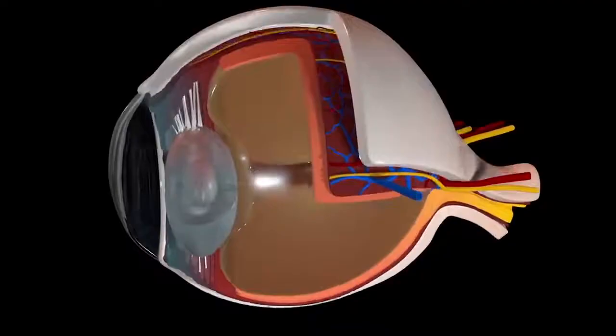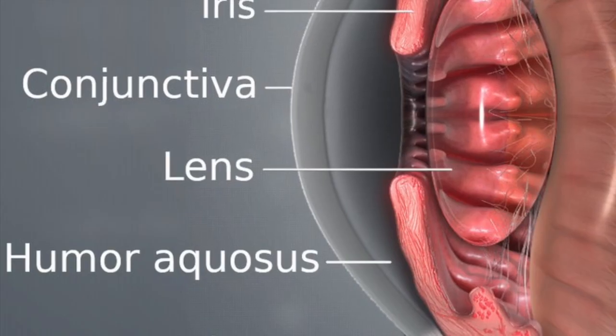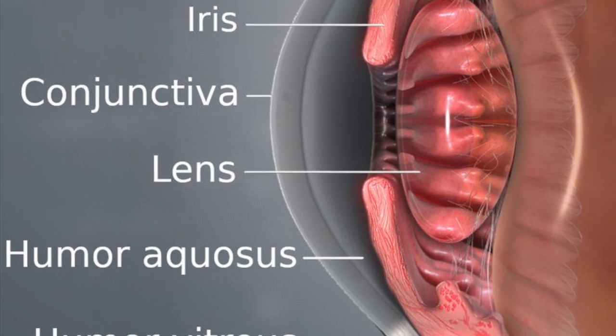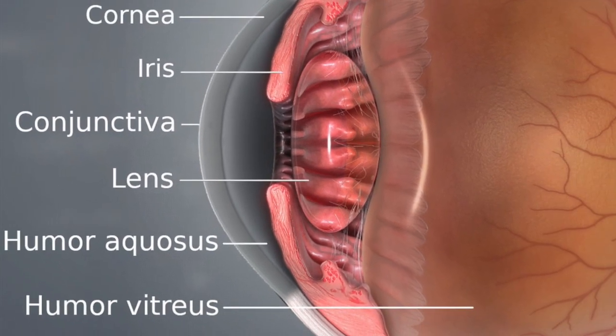A clear lens located behind the pupil acts like a camera lens because refraction of light takes place here.